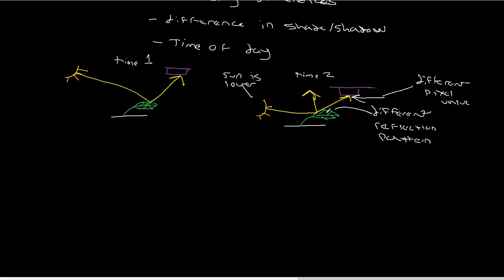So even though at time one and time two they were both still a leaf — the actual surface feature never changed — because the sun was lower, it changed the reflection pattern. Something about this geometry is different: the sun is lower, so some of the energy reflected in a different direction, and we get a different pixel value, even though the surface feature is the same. That's image variance — the fact that even though we have the same surface feature, we get a different pixel value due to the sun being in a different position, giving us a different geometry and a different reflection pattern.